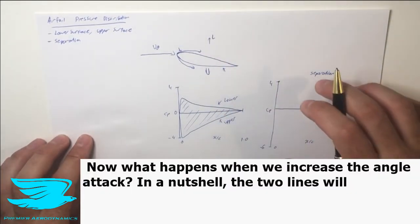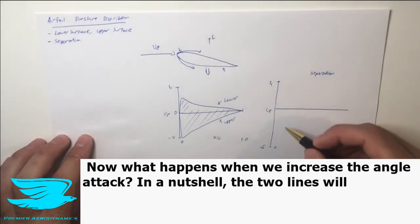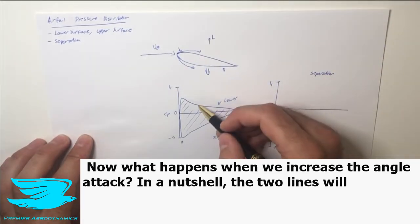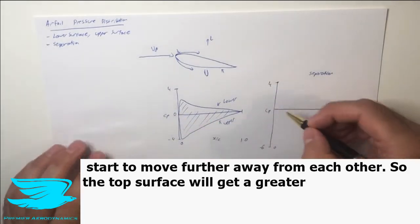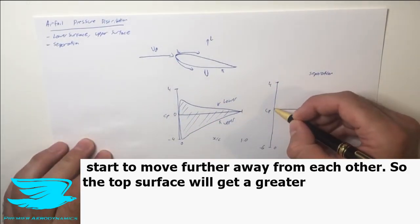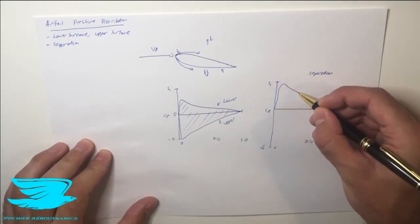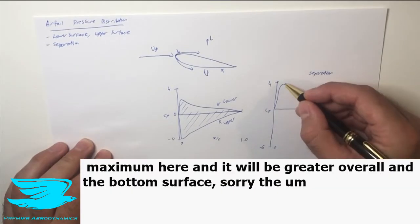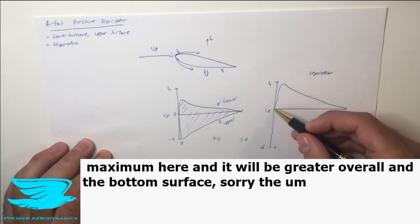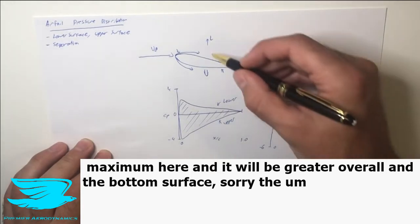Now what happens when we increase the angle of attack? In a nutshell, the two lines will start to move further away from each other. So the top surface will get a greater maximum here and it will be greater overall.